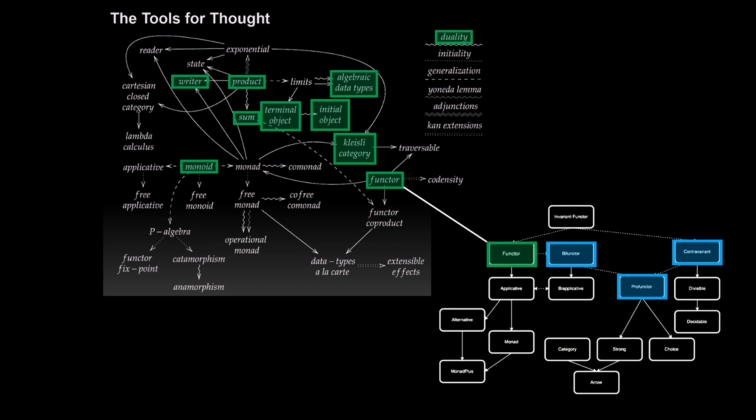So bifunctor, profunctor, and contravariant. It doesn't explicitly mention covariant, but that's just because it's everything that we've seen up till now. And note that there is a little bit of duplication between these two diagrams. Everything in yellow slash orange here shows up in both diagrams.